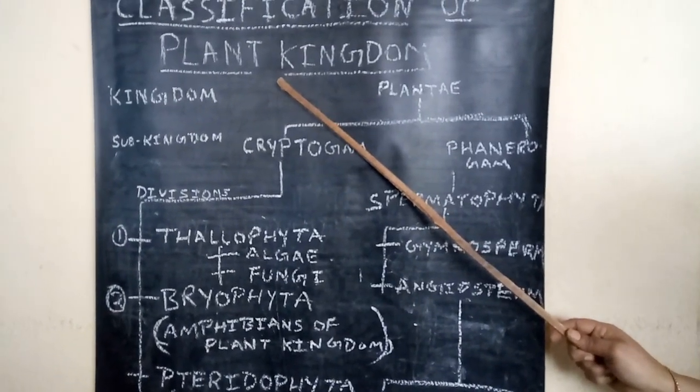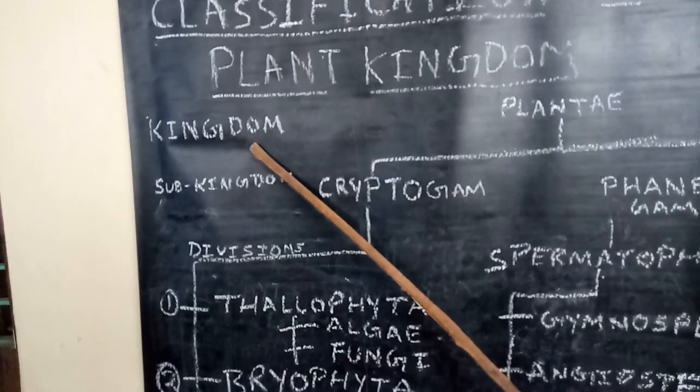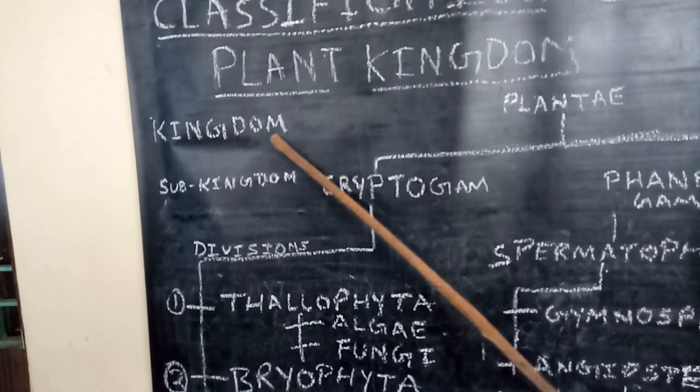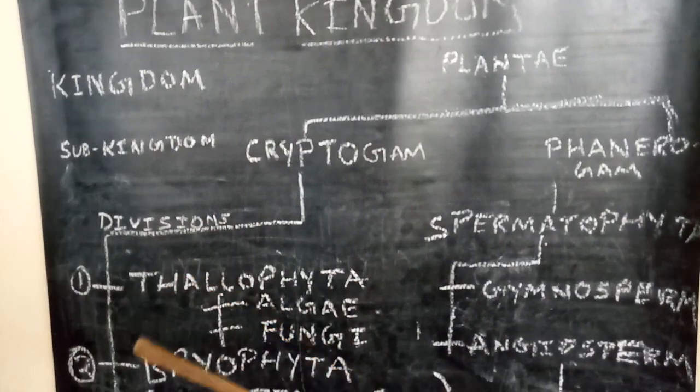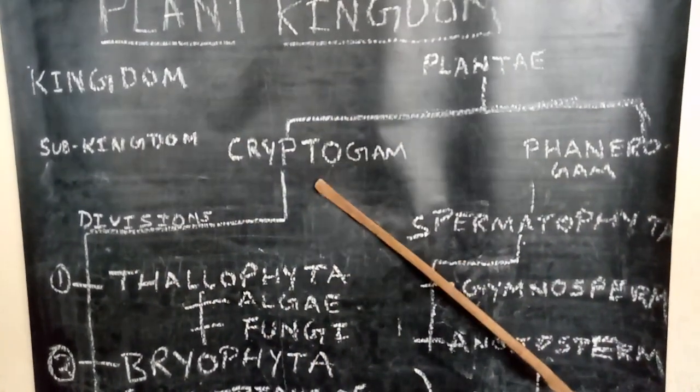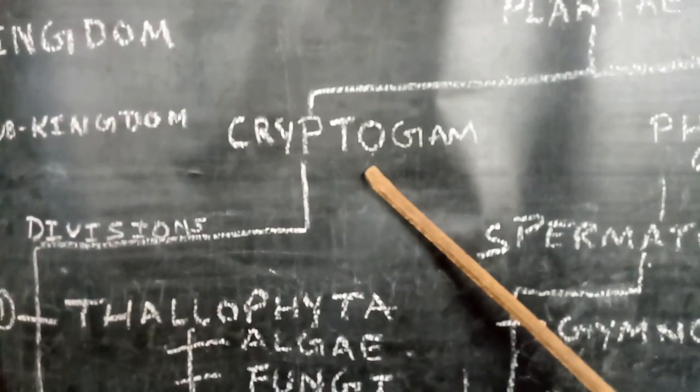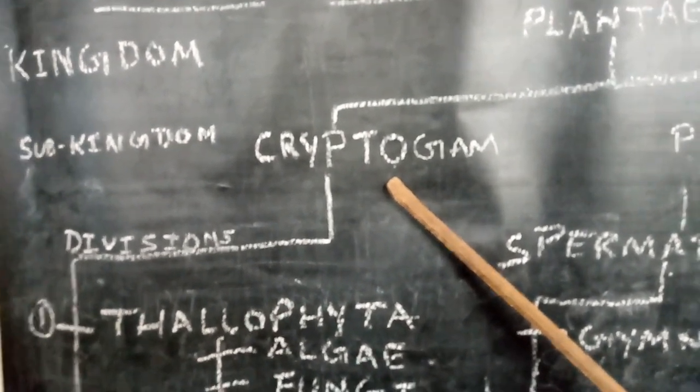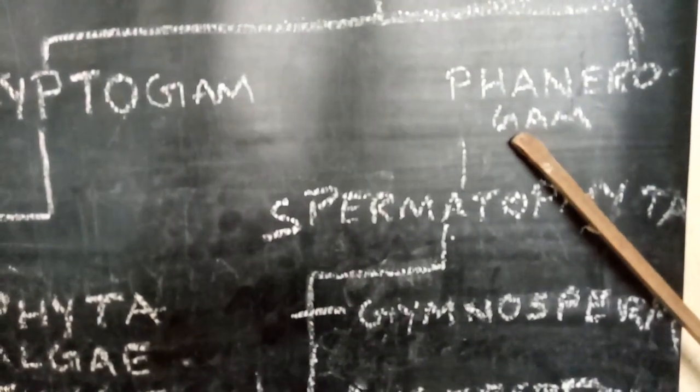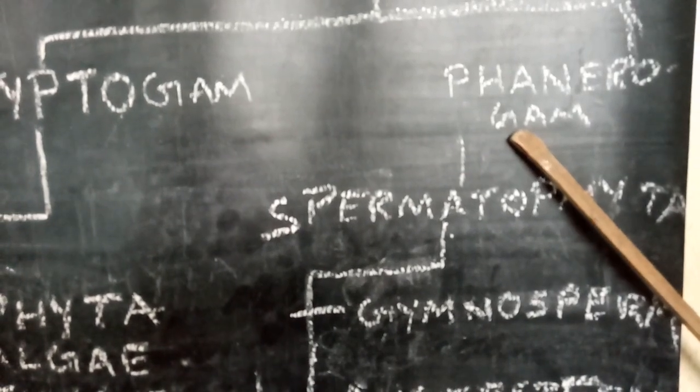This present classification was given by ICLA. All plants belong to the kingdom Plantae, which is divided into two sub-kingdoms: Cryptogams and Phanerogams. Cryptogams are flowerless, seedless, spore-bearing plants. Phanerogams are flowering, seed-producing tracheophytes.